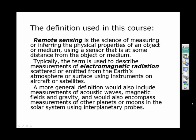A more general definition would include measurements of acoustic waves — for example, sonar through water bodies such as lakes or oceans — as well as magnetic fields and gravity. These are used in satellite and airborne measurements of the Earth's surface and subsurface. I would also suggest that remote sensing encompasses measurements of other planets and their moons using interplanetary probes — not probes that land, but those that measure remotely by going into orbit. So it's quite a general definition of remote sensing.